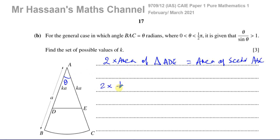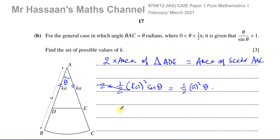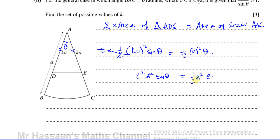We follow the same steps: K squared A squared times sin θ equals ½ A squared theta. The A squared terms cancel, giving K squared equals θ divided by 2 sin θ.